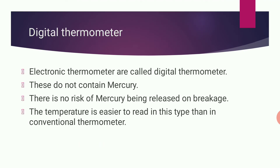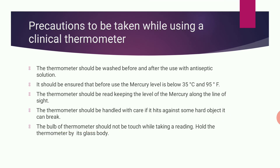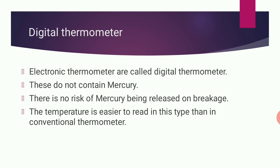Next, digital thermometer — that is, electronic thermometer. These do not contain mercury, so there is no risk of mercury being released on breakage. The temperature is easier to read because readings are displayed in the form of digits. The word digital means digit.